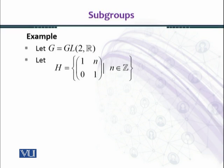Let G = GL(2, R), the general linear group of matrices of order 2 by 2 with entries in set of real numbers. Let H = {[[1, n], [0, 1]] : n ∈ Z}.